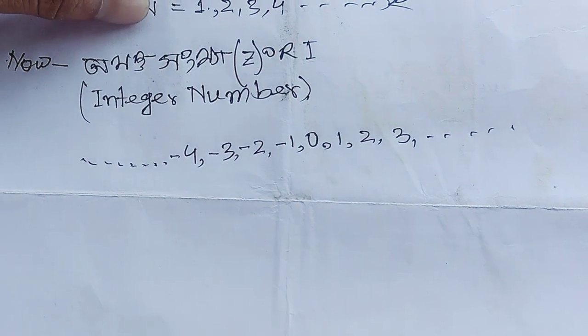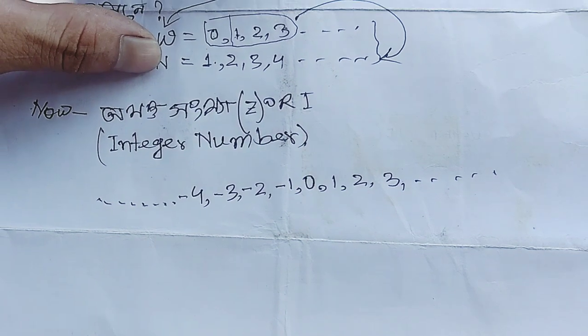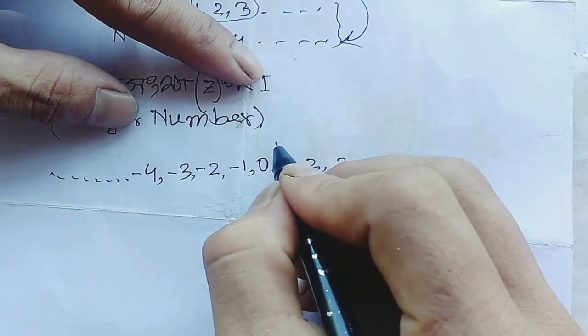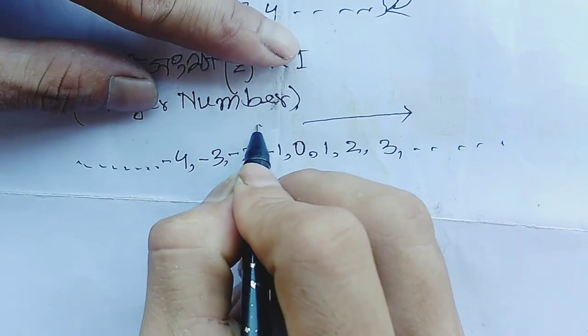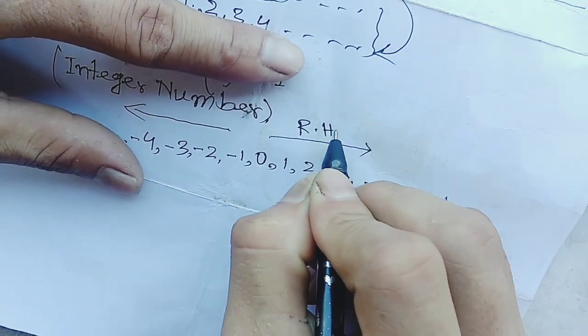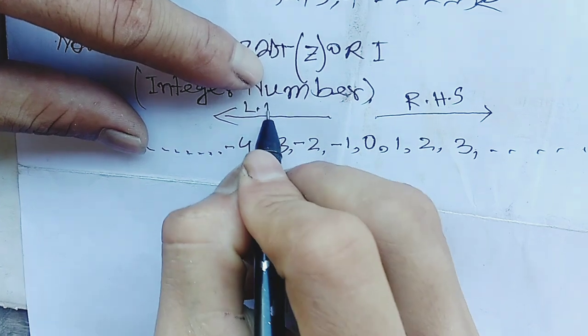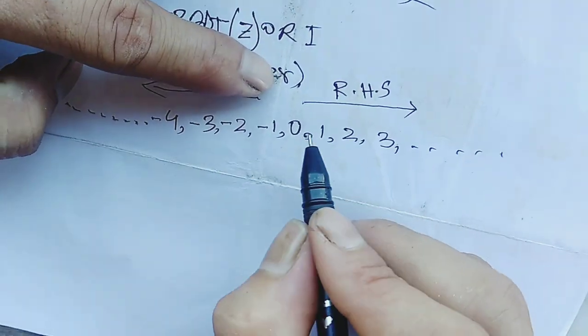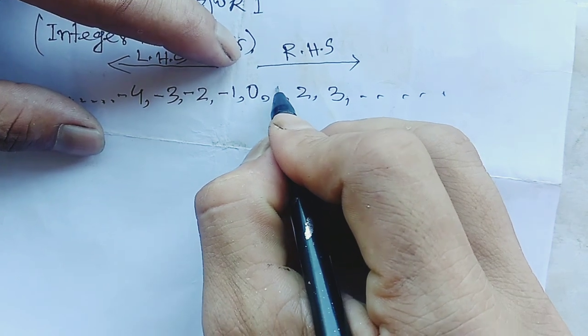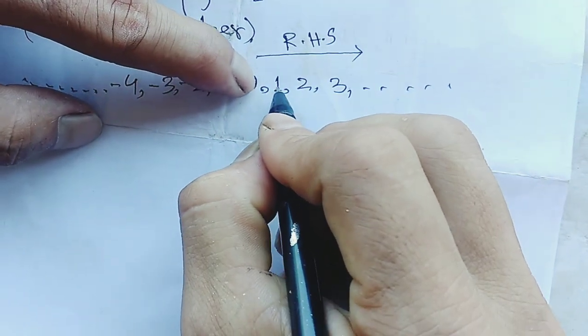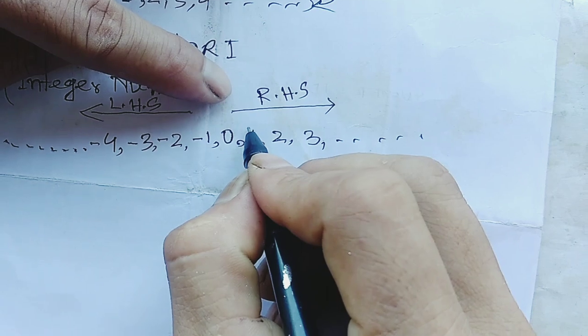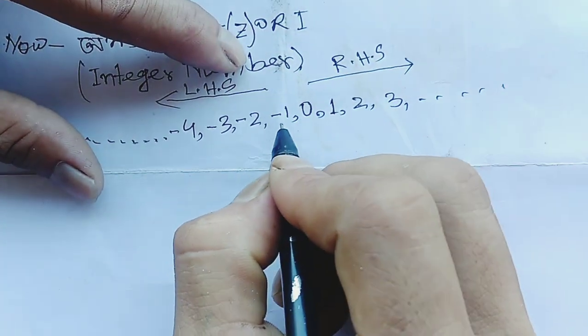Next, there is a letter called Integer number, named Z or I. It says this letter, the letter of integers. This is the left-hand side on the right-hand side. This one is positive.